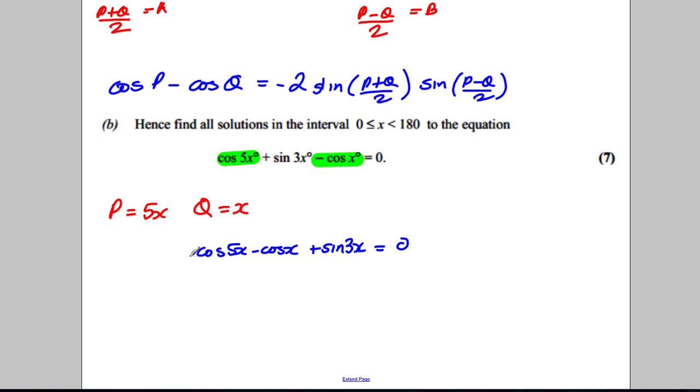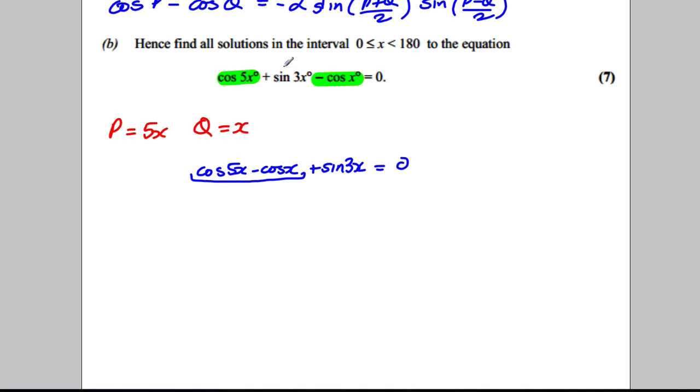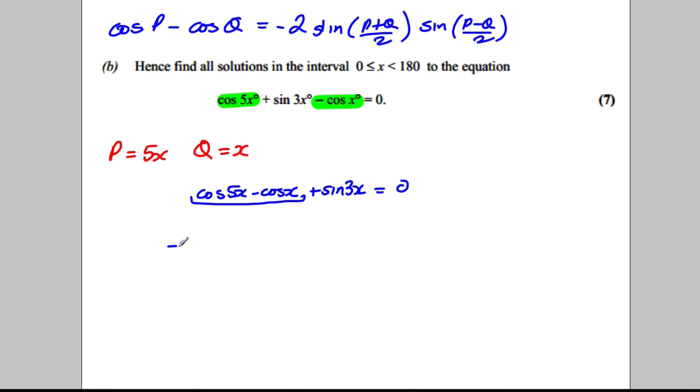And rewrite this whole thing as cos 5x take away cos x add sin 3x is equal zero. Now these two things here I can use the formula for here and say that these two things would be equal to -2 sin of, I add the P and the Q and divide by 2, so 5x + x over 2 which would be 3x.